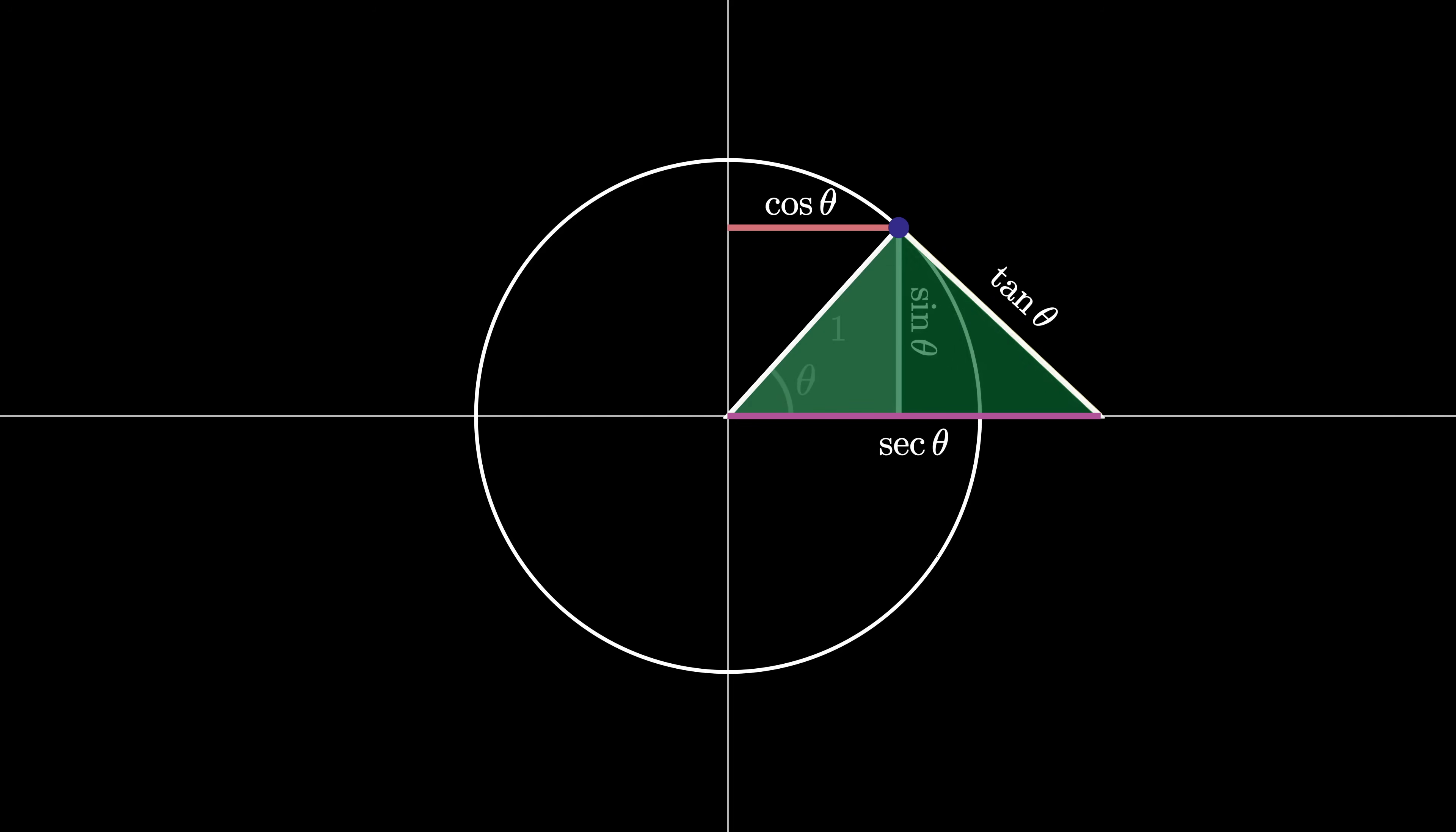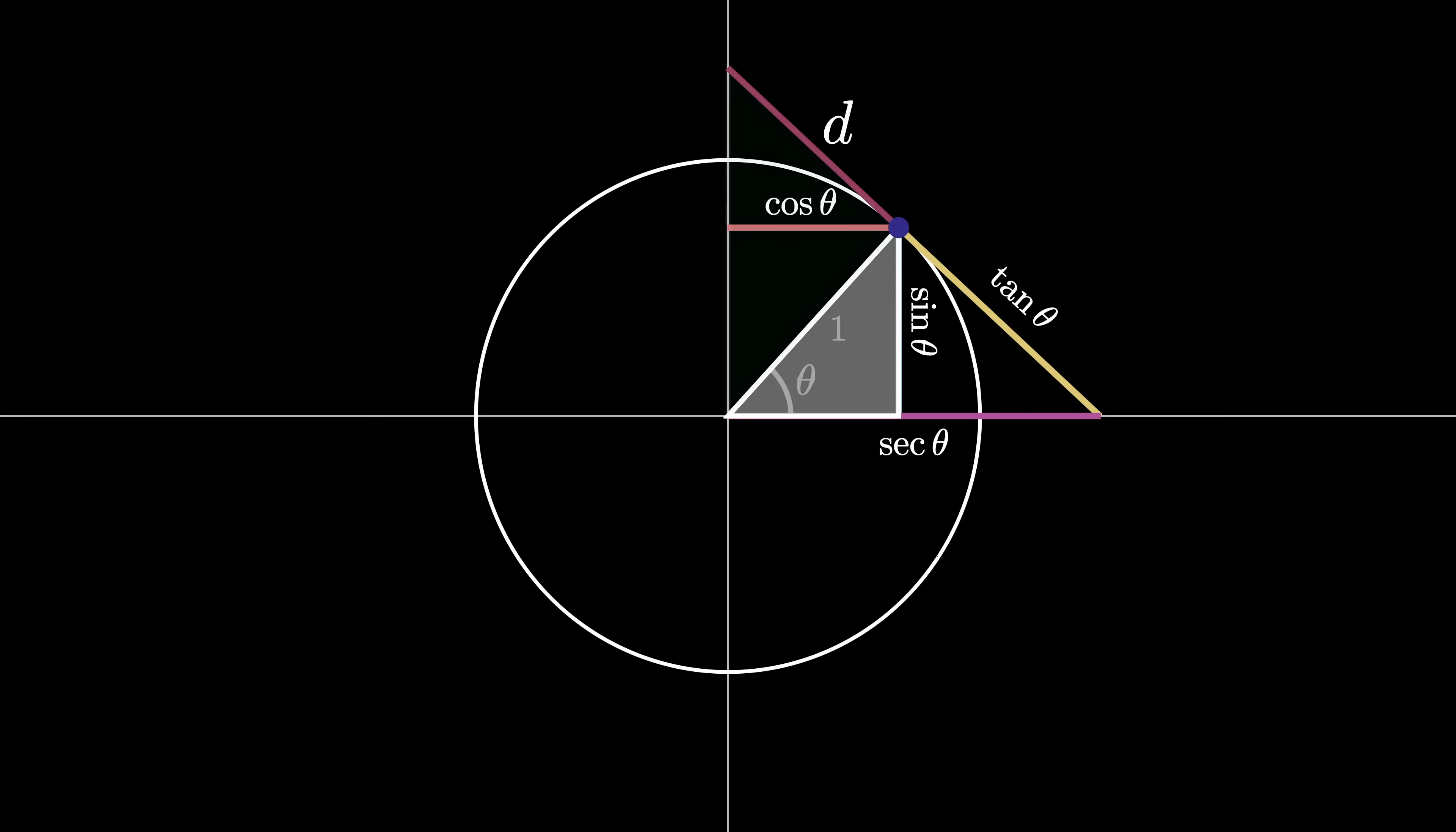Now we perform a similar process starting at the point on the circle and drawing a line perpendicular to the radius that connects to the y-axis with a length of D. Because the two pictured triangles are similar, we can see that D divided by 1 must equal cosine of theta divided by sine of theta. Therefore, the length of the new line we drew must be cosine of theta divided by sine of theta, and we define this to be the cotangent of theta.